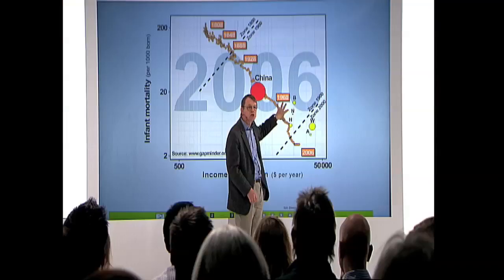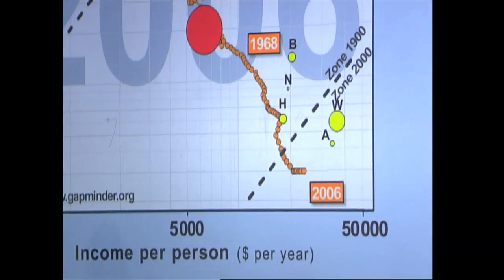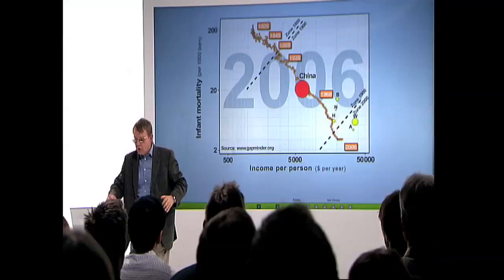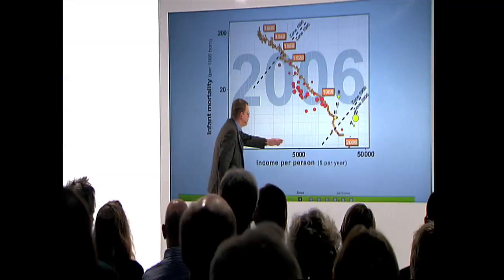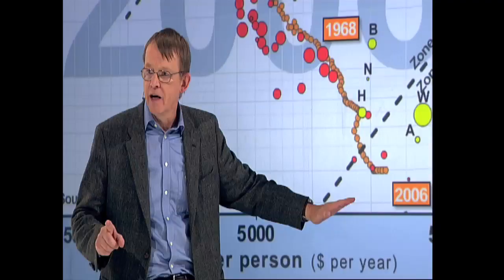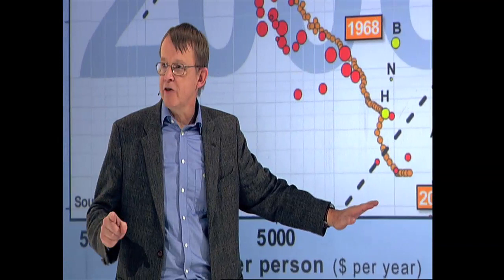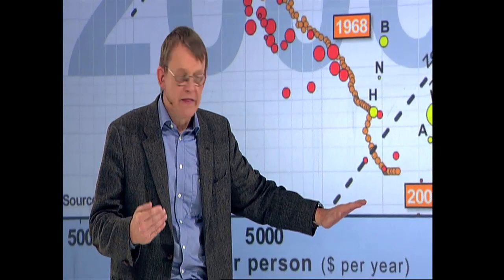And now I'll split China, and China will split into provinces. Look at the different provinces of China. Hong Kong, Macau, Shanghai, and Beijing all went into the 2000 zone. Don't make any mistake. Shanghai has better health than United States today. Shanghai has the same purchasing power as North Europe. They are already here.